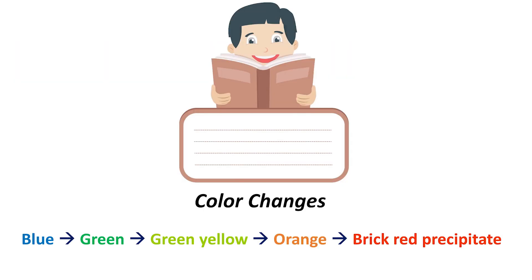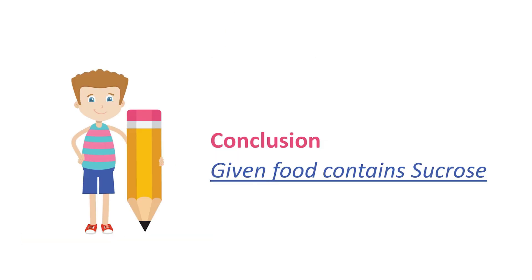In this practical, there was a color change starting from blue — the solution turned into green, greenish yellow, orange, and ended up in a brick red precipitate. The color change observation is similar to the monosaccharide test because the disaccharide sucrose was converted to monosaccharide glucose by adding sulfuric acid. That is why we get the same color change at the end of the experiment. So with these observations, we can conclude the food contains sucrose, which is a disaccharide.